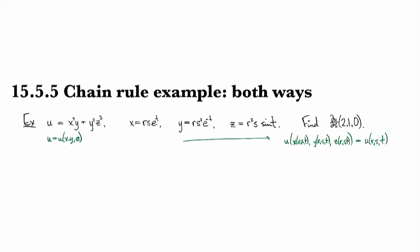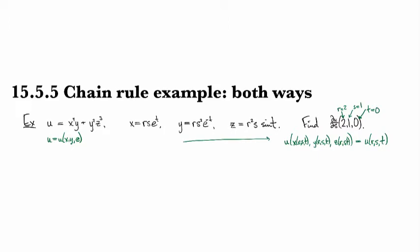And that's telling you that we're looking at when r is equal to 2, and when s is equal to 1, and when t is equal to 0. So those values refer to r, s, and t, not x, y, and z.